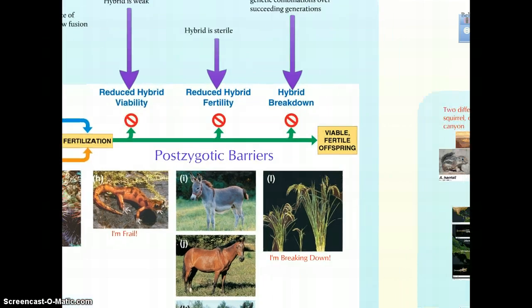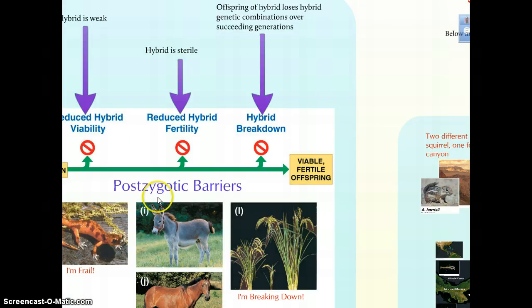In line with this idea of reduced viability, you could also have offspring that are easily damaged and destroyed.